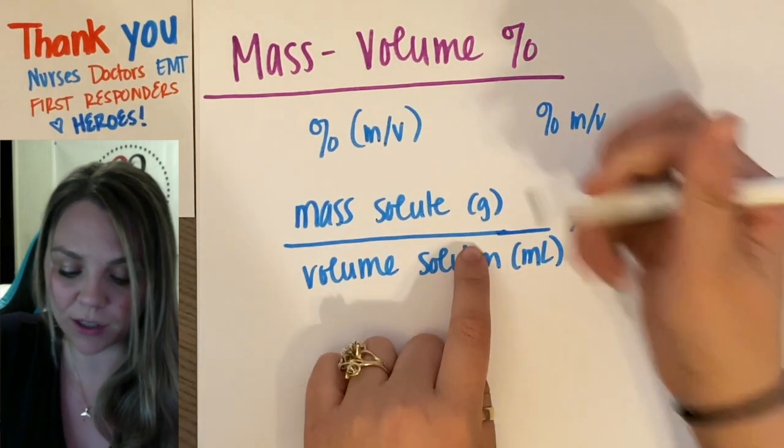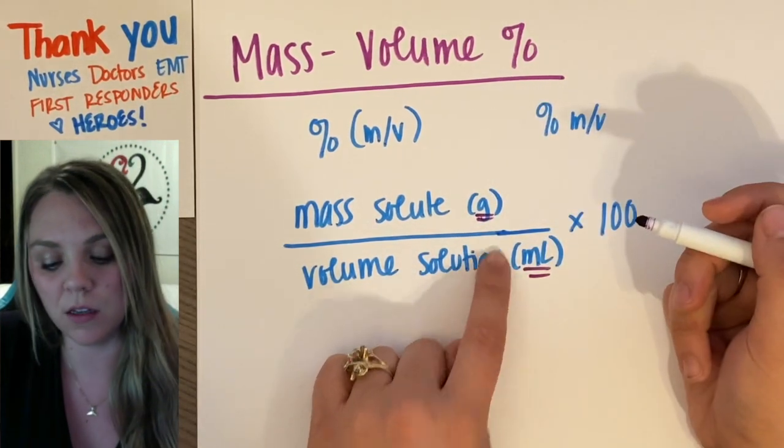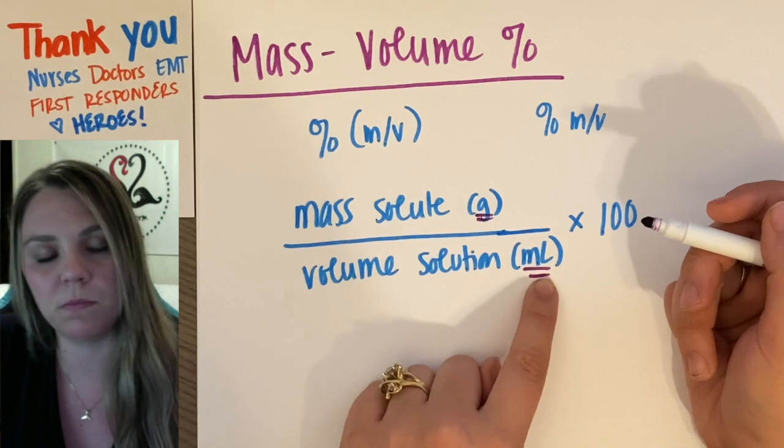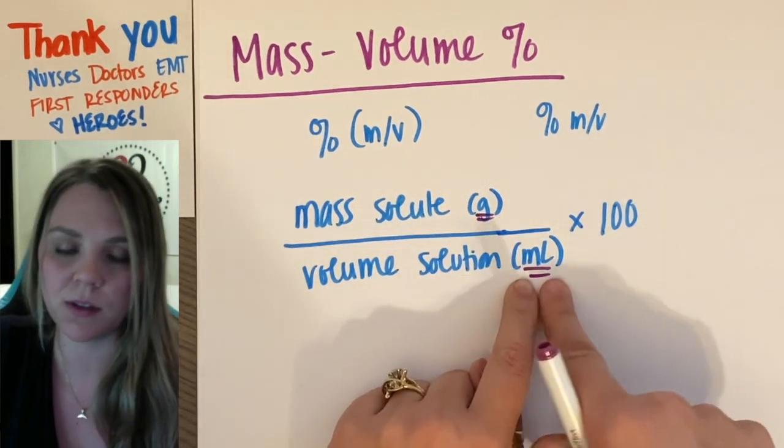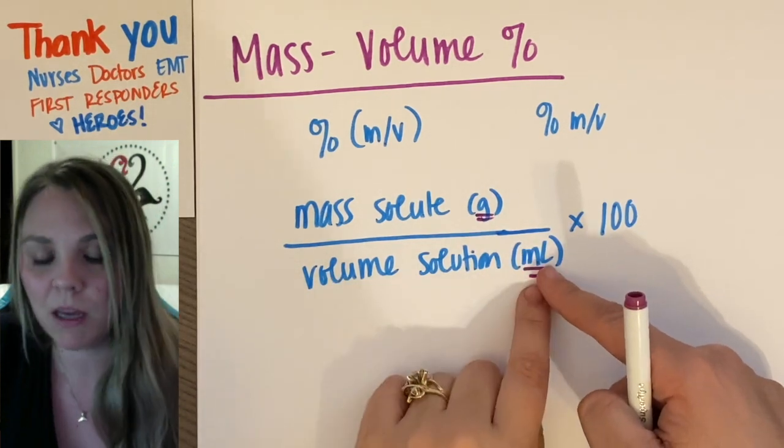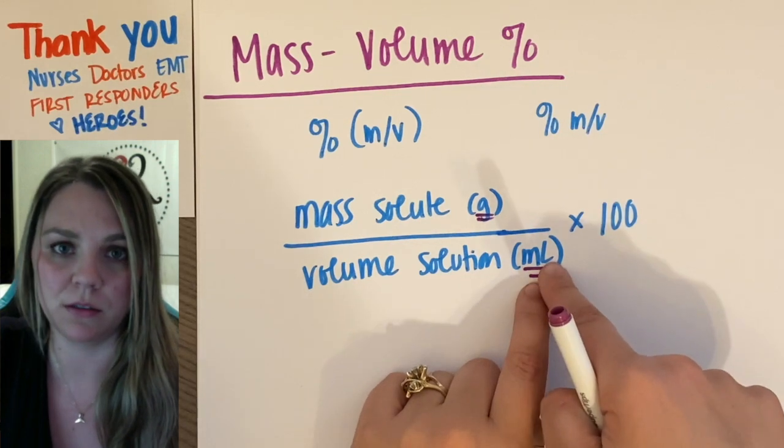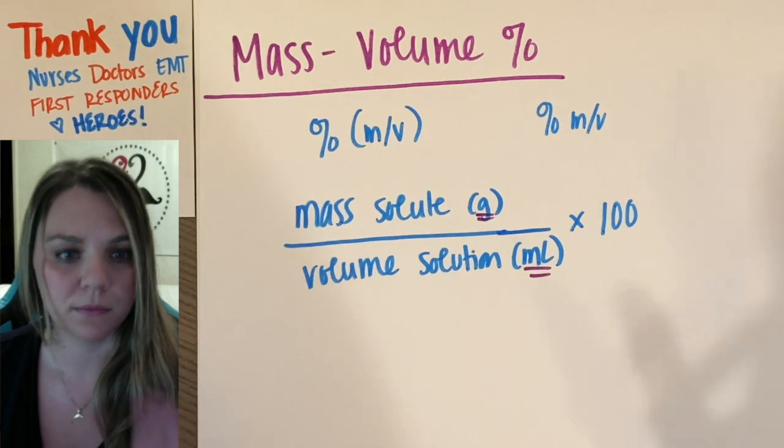Now, it is very important that you actually pay attention to the units of grams and milliliters. So just be careful. They have to be in grams and mils. So they might give you something, like a question might tell you the volume of your solution is two liters. Make sure you convert that to milliliters. You have to be in grams, you have to be in mils. Easy.